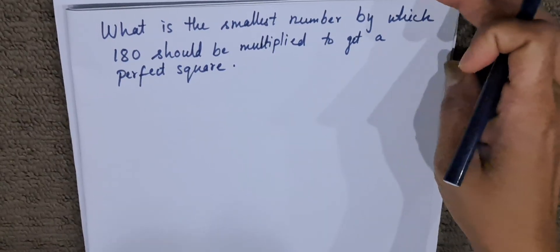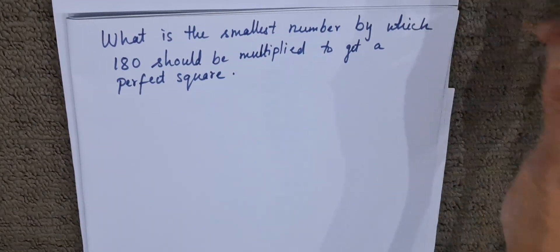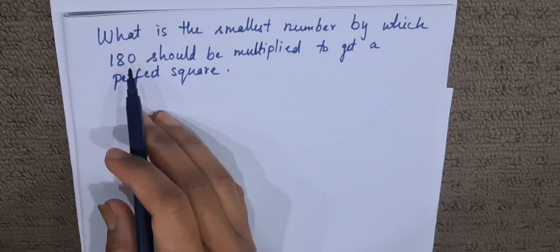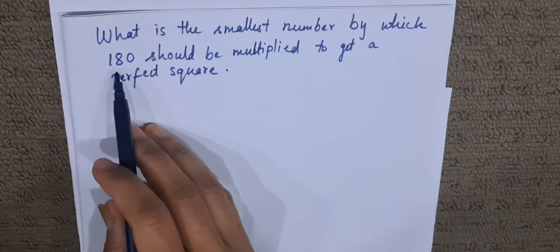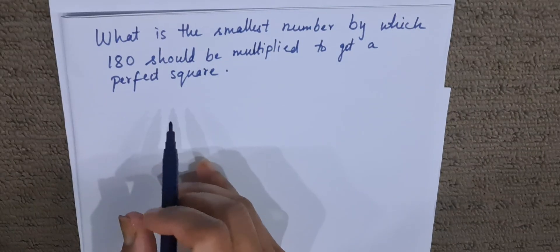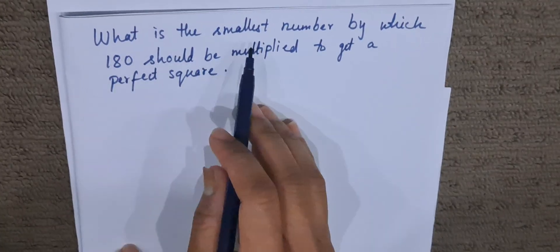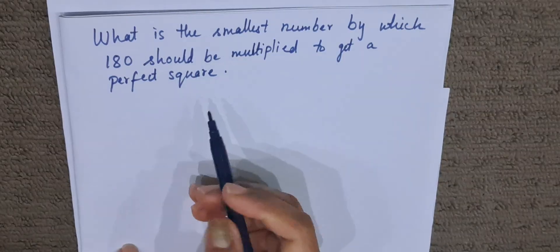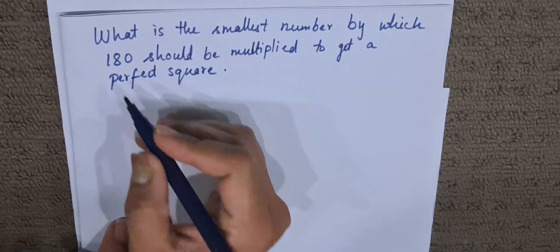Hello everyone, welcome to AG Mathematics. This is Reka here. Today we are going to do a sum in which we have to find the number to be multiplied with 180 to get a perfect square. The question is: What is the smallest number by which 180 should be multiplied to get a perfect square?